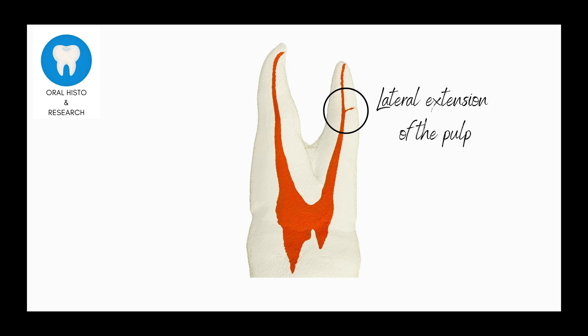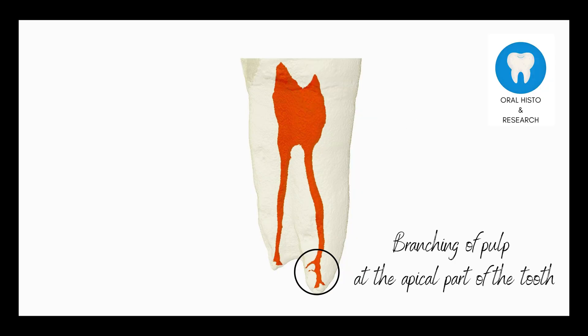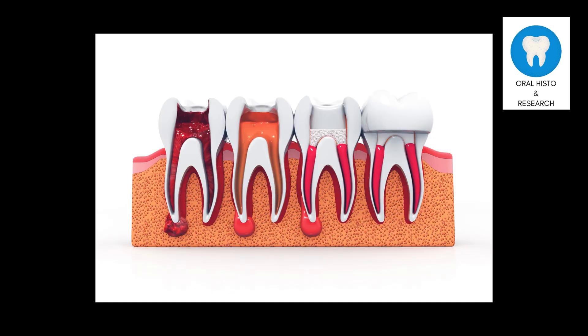Sometimes the pulp can have lateral extensions, as shown in this image, making the root canal treatment difficult. Occasionally, the pulp can branch at the apical part of the tooth, making root canal treatment complicated again. Remember that the success of root canal treatment is highly dependent on several factors, but the most important is the complete elimination of the root canal infection.